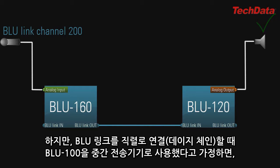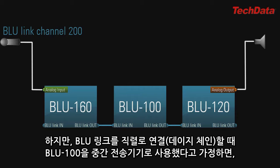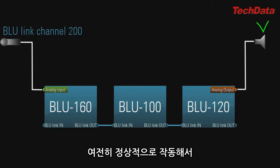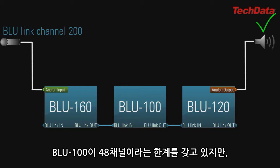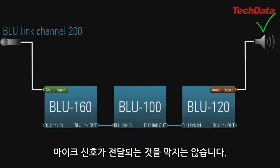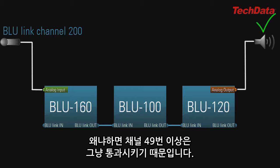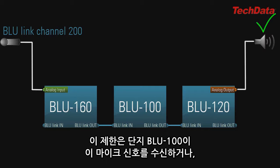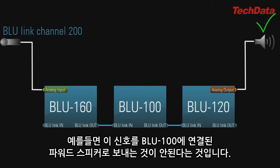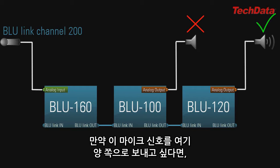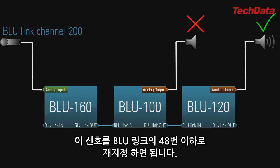But now let's say you place a Blue 100 midstream on the Blue Link daisy chain. This will still work — the mic will still get to the speaker. The Blue 100, even with its 48-channel restriction, will not prevent the mic from getting there, because channels 49 and above are still getting passed through. The only limitation is that the Blue 100 itself just wouldn't be able to receive and do anything with that mic signal. If you wanted the mic to reach both speakers, you'd simply need to reassign the mic signal to Blue Link channel 48 or lower.